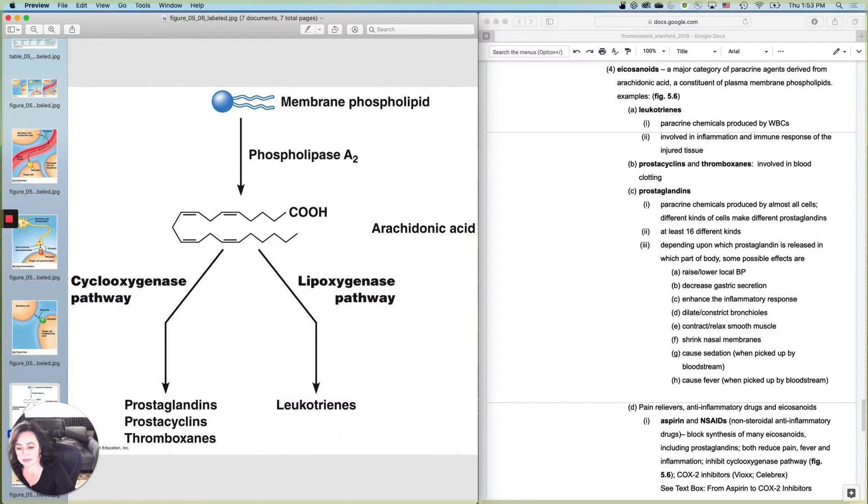The next category, I'm going to put these bottom two, prostacyclines and thromboxanes together. I'm going to lump those together. They actually do slightly separate things, but I'm going to tell you that those two are primarily involved in blood clotting, which again is a local function.